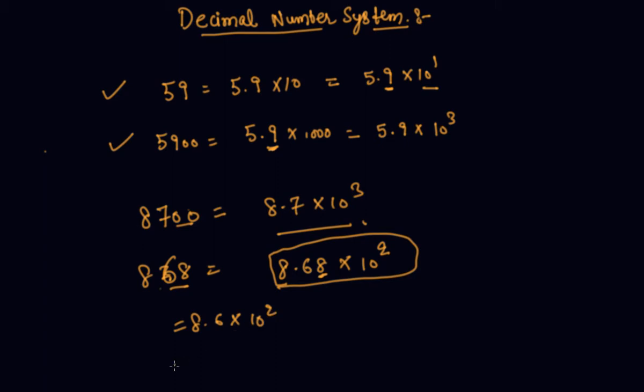If you write this as 8.6 times 10 raised to power 2, this would give 860, which is not equal to 868, so this is a wrong method. In this case, if 868 is given to you, there should be two digits after the decimal.